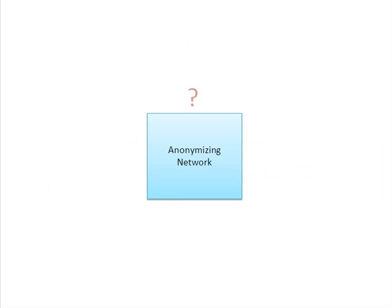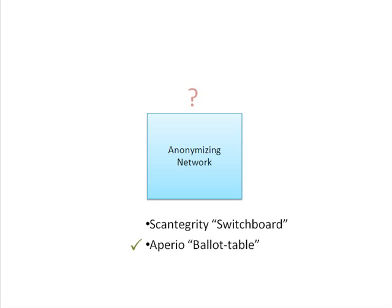So how does this network work? There are several ways to implement it, some being more difficult to explain than others. In our paper, we propose a simple network which we call the switchboard — it resembles an old-fashioned telephone switchboard. This can get a little complicated to show with all the wires running everywhere, so I'll explain it using the network of another voting system, Appirio.